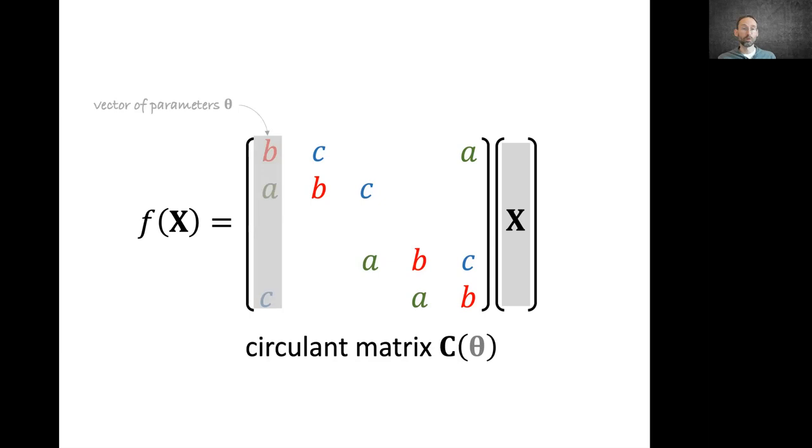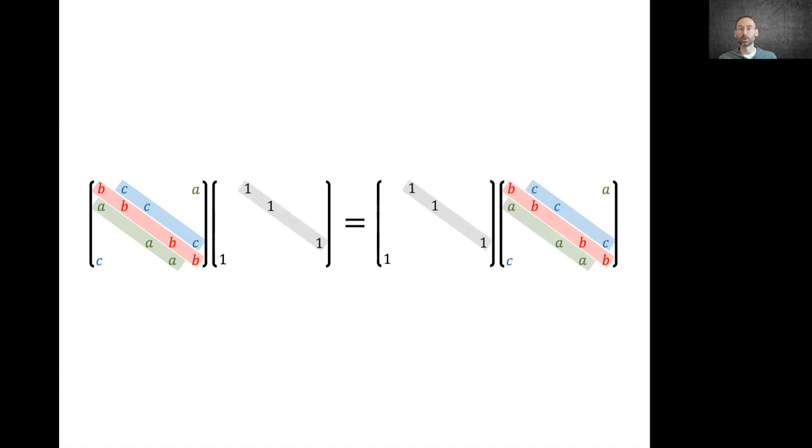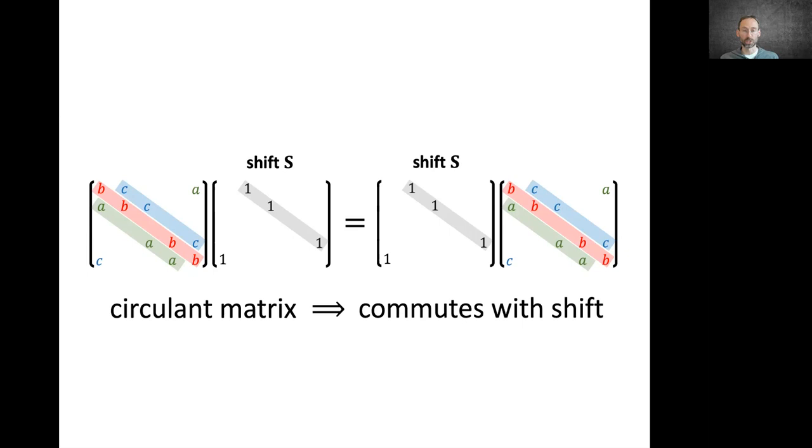From the standpoint of algebra, circulant matrices are very special. They commute with respect to multiplication, which is unlike normal matrix multiplication. In particular, they commute with a special circulant matrix that cyclically shifts the elements of a vector by one position. We call this the shift operator. Circulant matrices commute with shift, which is just another way of saying that convolution is a shift-equivariant operation.